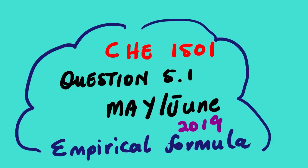In today's lesson we are going to look at Chemistry question 5.1, May June 2019. We are going to look at empirical formula. Yes, we have started with examination preparation for our major examination.